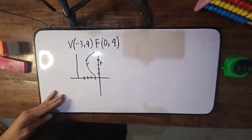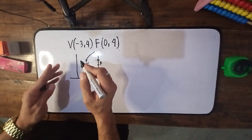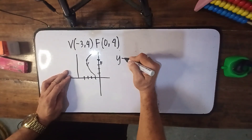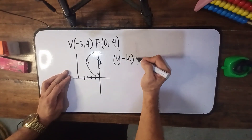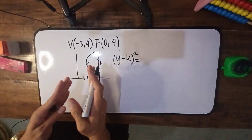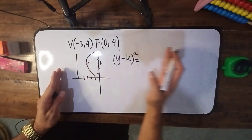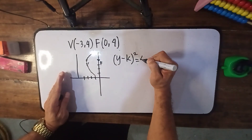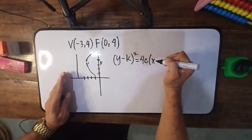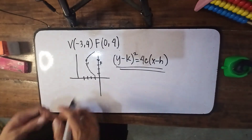At nandito yung directrix — ang directrix natin naka-vertical. So kung naka-vertical siya, ibig sabihin gagamit tayo ng (y minus k) quantity squared equals. Papunta siya sa positive infinity, so ibig sabihin 4c ang gagamitin natin: 4c times (x minus h). Ito yung equation na gagamitin natin in this example.